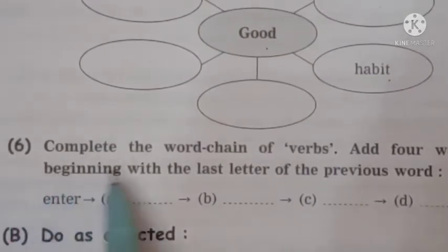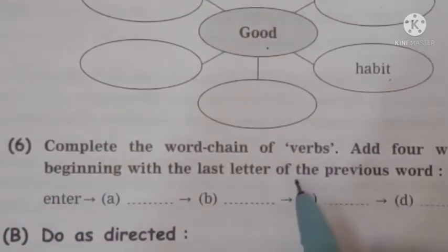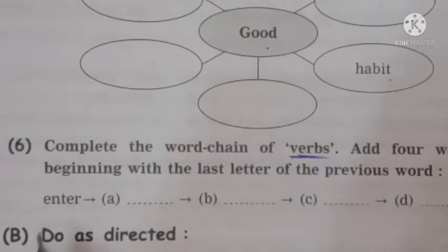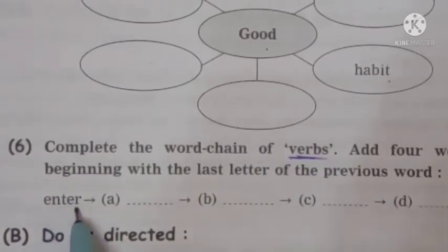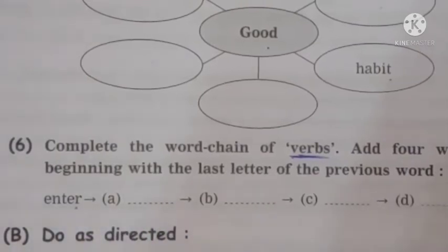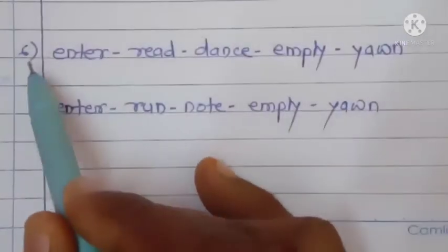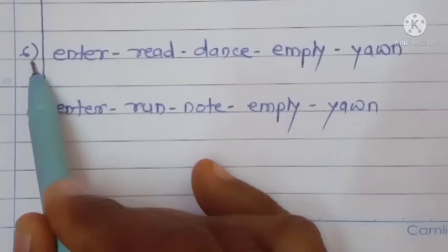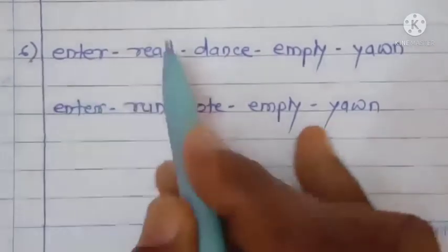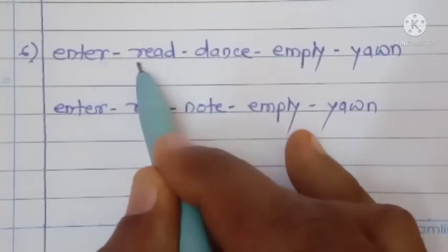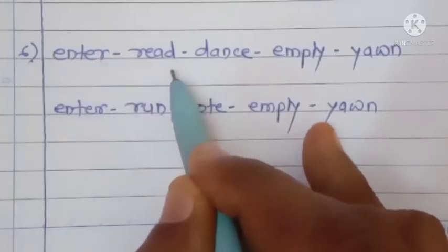Sixth activity: complete the word chain of verbs. You have to complete a word chain, and it must be of verbs. The first verb is 'enter'. Then you need related words — verbs — starting with the last letter of the previous word. So: enter — the next verb begins with 'r' — read. Simple verbs are needed here.